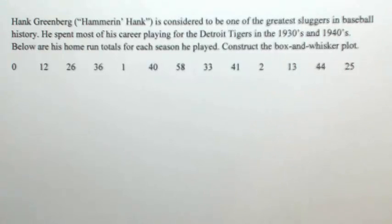Hank Greenberg, nicknamed Hammerin' Hank, is considered to be one of the greatest sluggers in baseball history. He spent most of his career playing for the Detroit Tigers in the 1930s and 1940s. Below are his home run totals for each season he played. Construct the box and whisker plot.